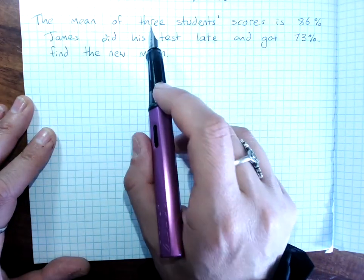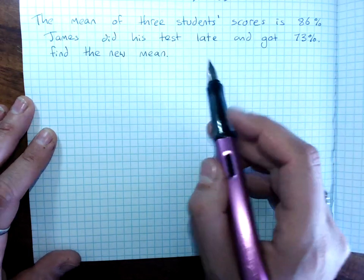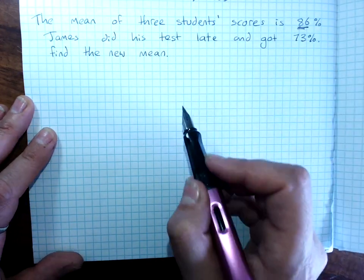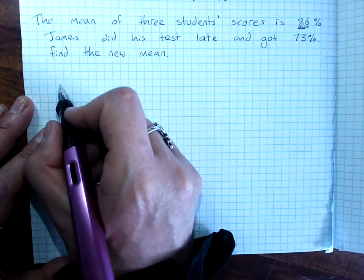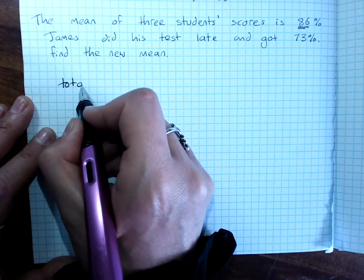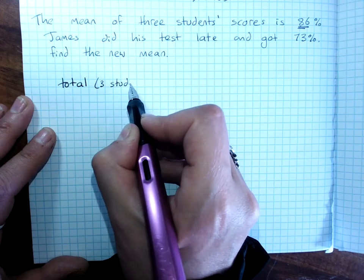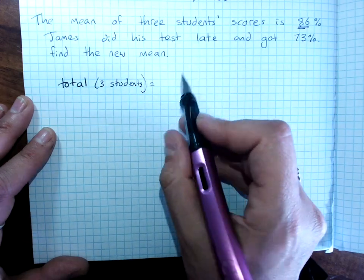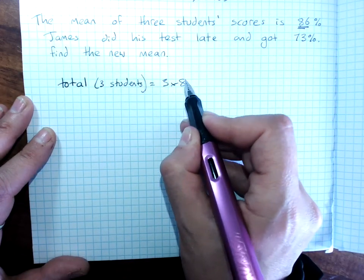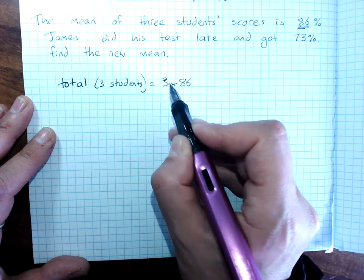Now, they haven't told us what these three students' scores were. But they have said that the average is 86. So, the total of those three students' scores will be 3 lots of 86.